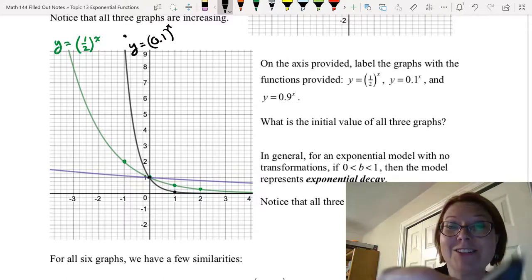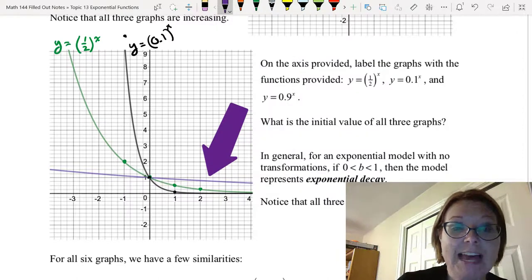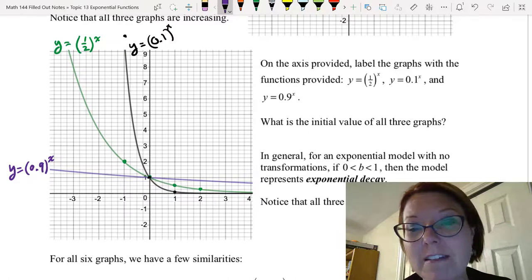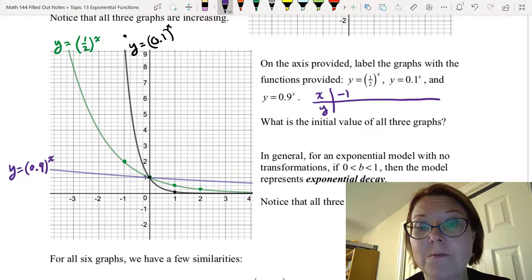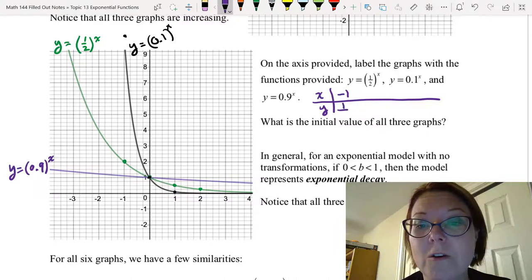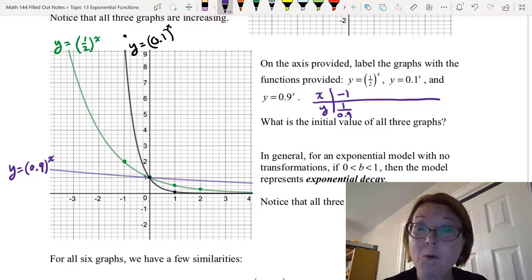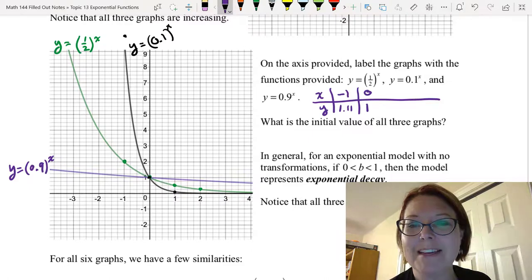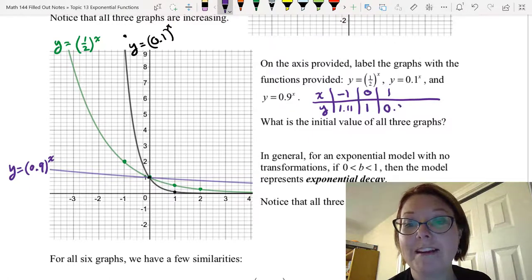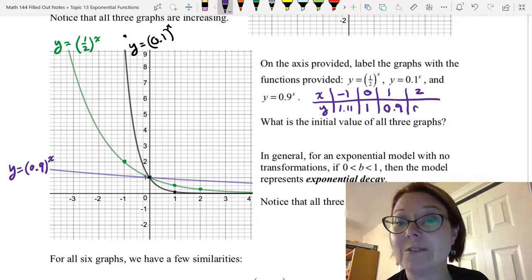By process of elimination, our last graph is going to be 0.9 to the x. That's the purple one, or the one that looks like it's the flattest. We could label some points on this graph by making a little table for x and y. If x is negative 1, then y is 0.9 to the negative 1, or we could write that as 1 over 0.9, or we could write that as 1.11 with the ones repeating. If x is 0, we'd have 0.9 to the 0, and that's 1. If x is 1, we'd have 0.9 to the first, which is just 0.9. And if x is 2, we'd have 0.9 to the second, which is 0.81.